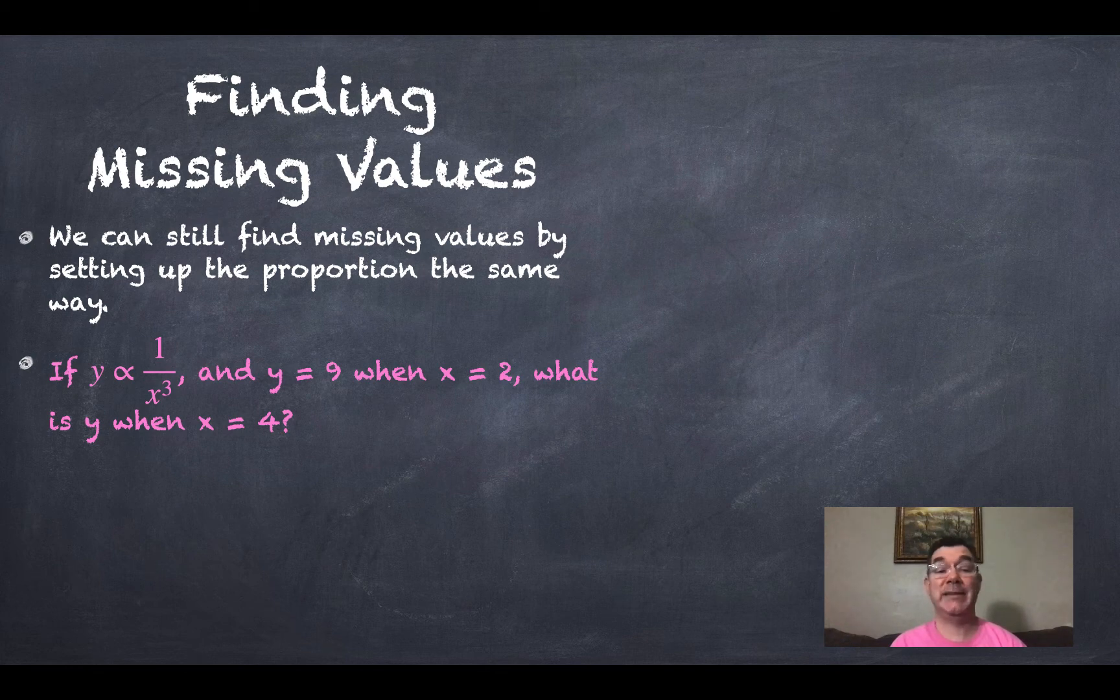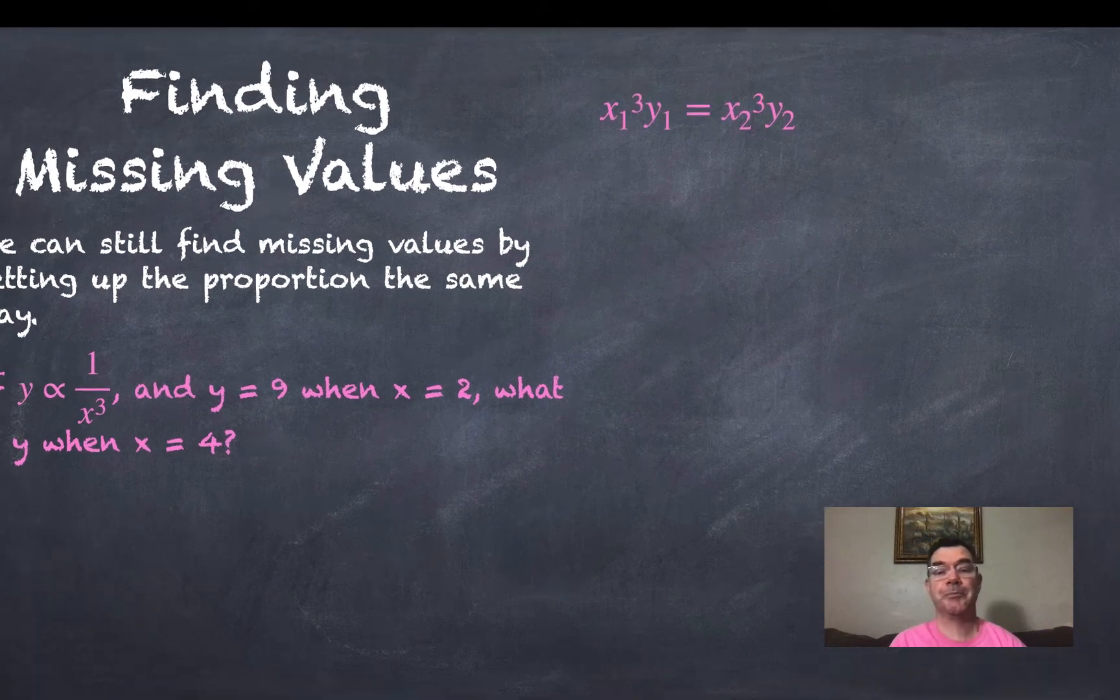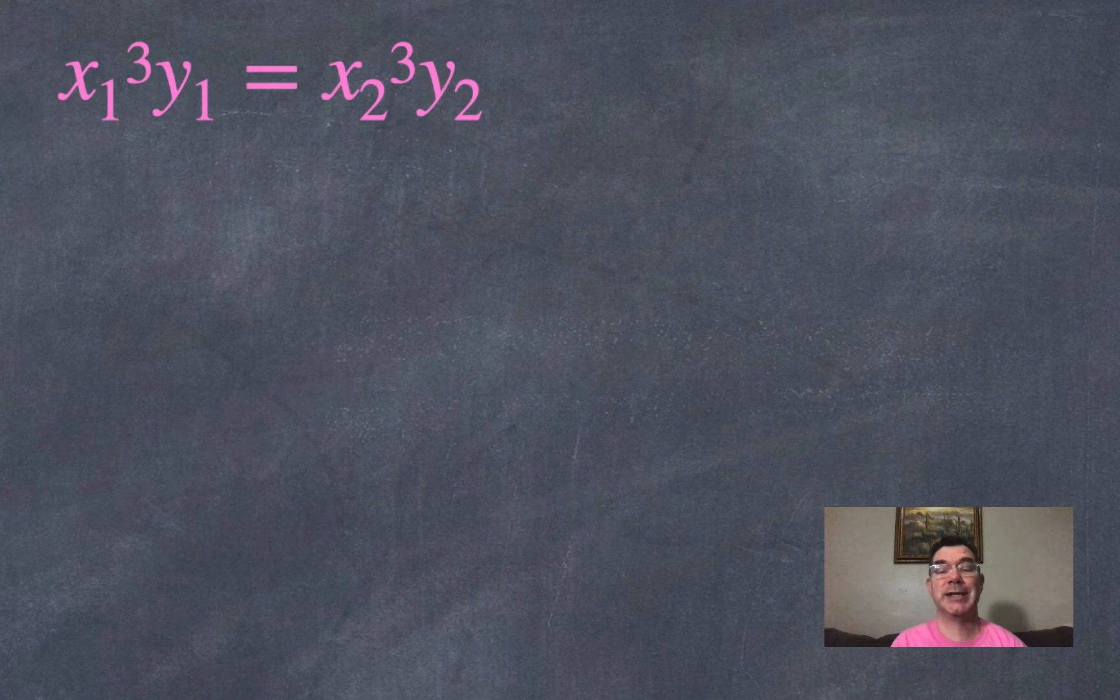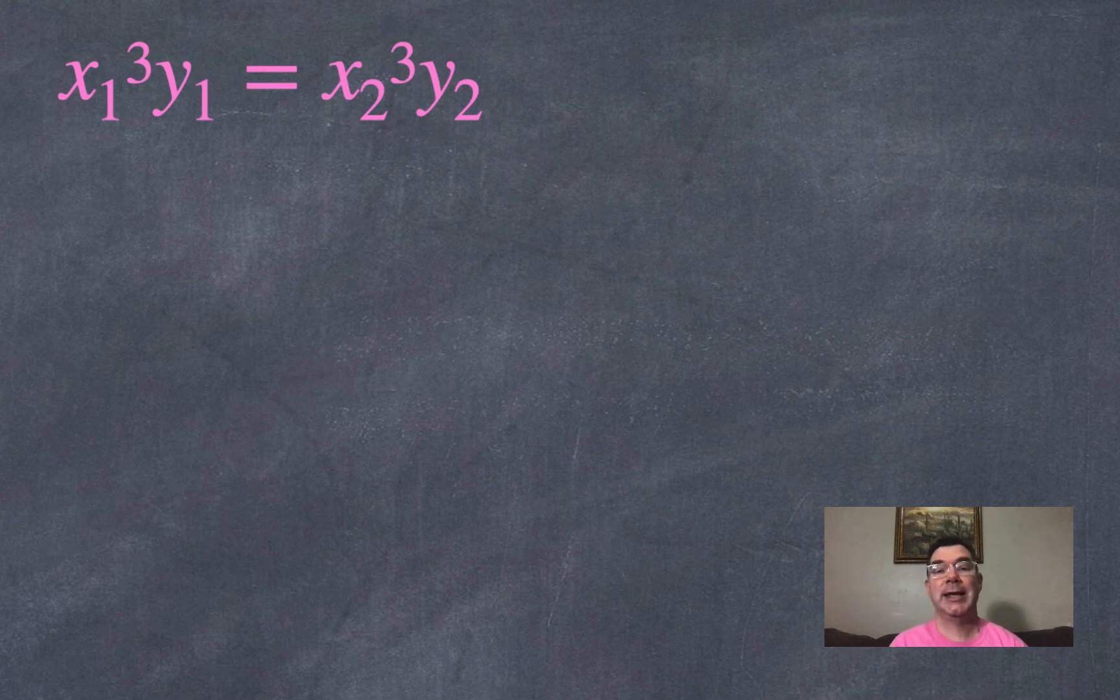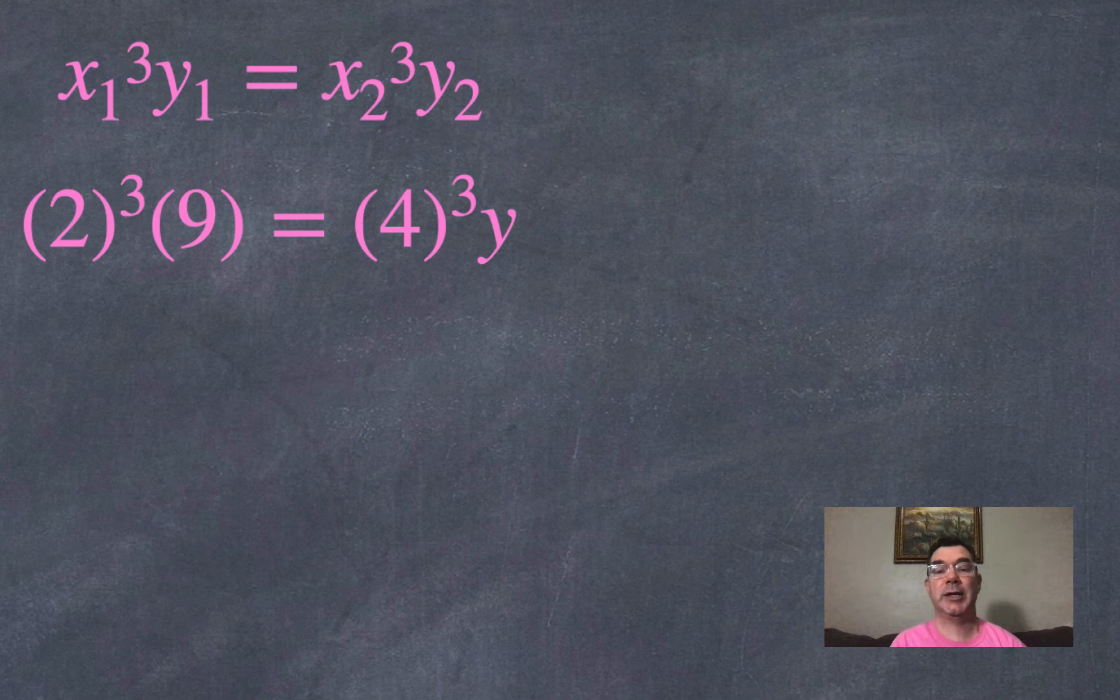So if y is inversely proportional to x cubed, I multiply x cubed times y on each side and I can set up my equation that way. So x₁ cubed times y₁ is going to equal x₂ cubed times y₂, and now I will plug in the information that I know.